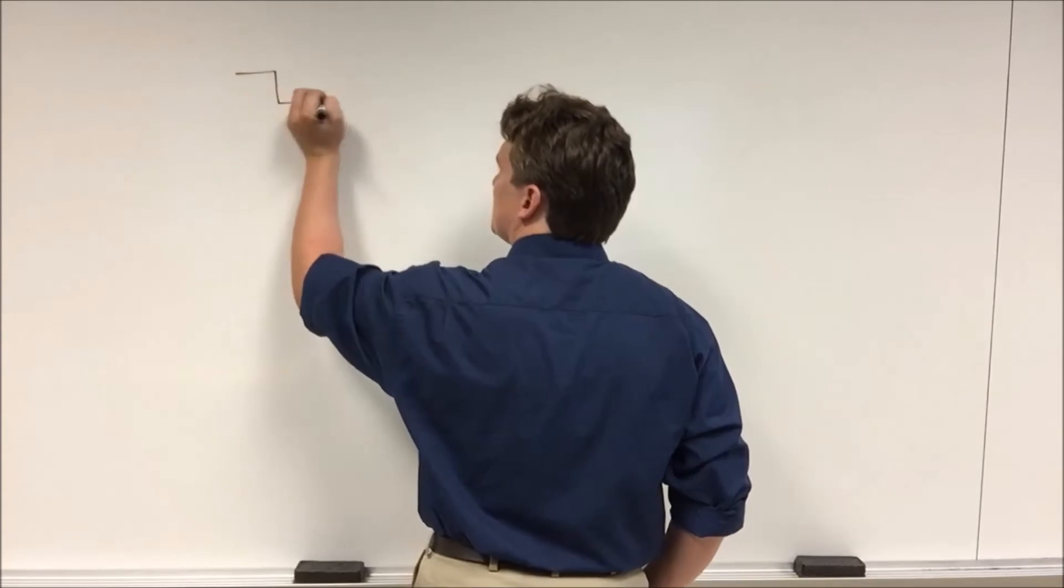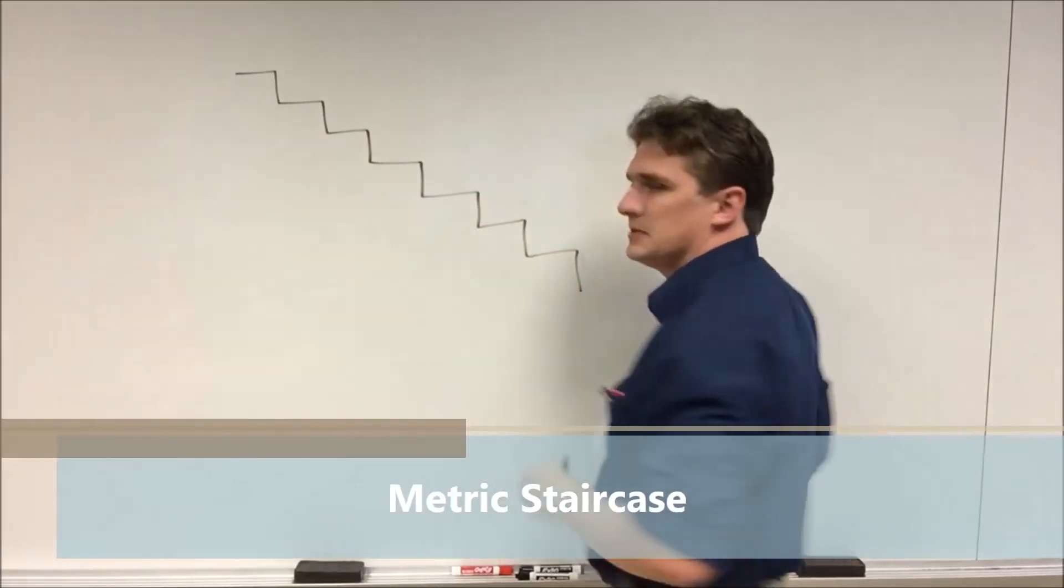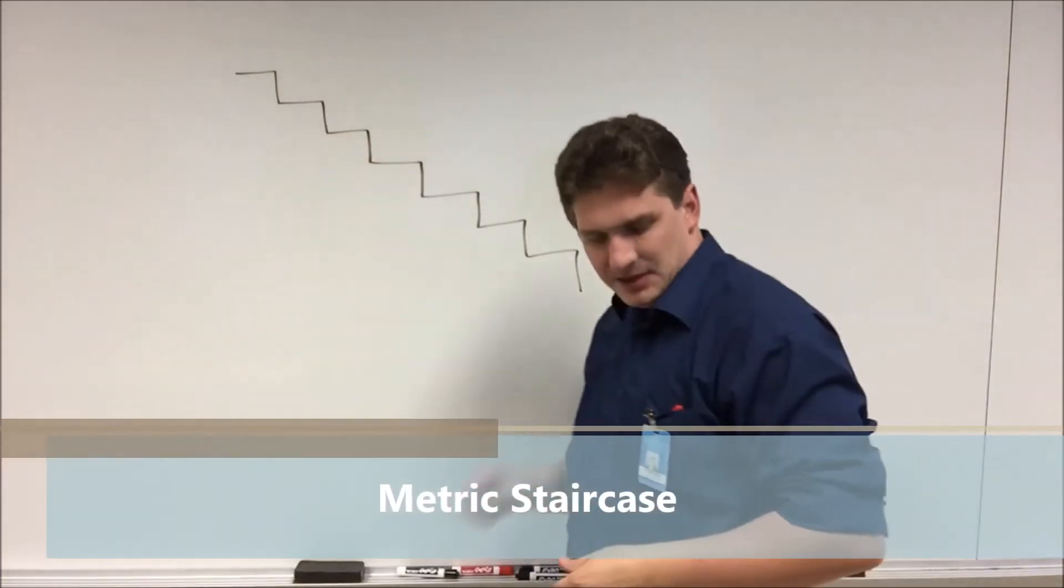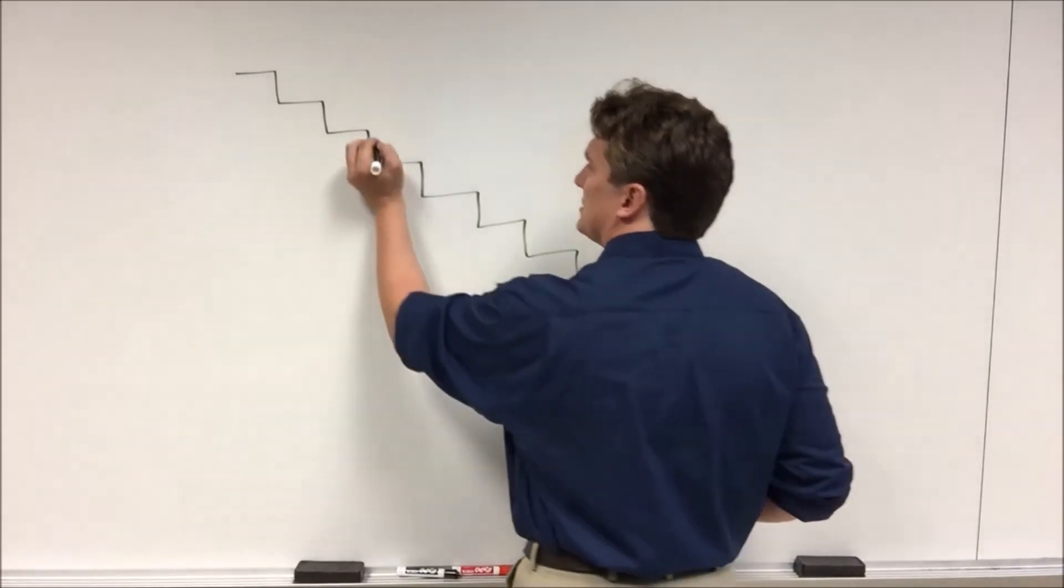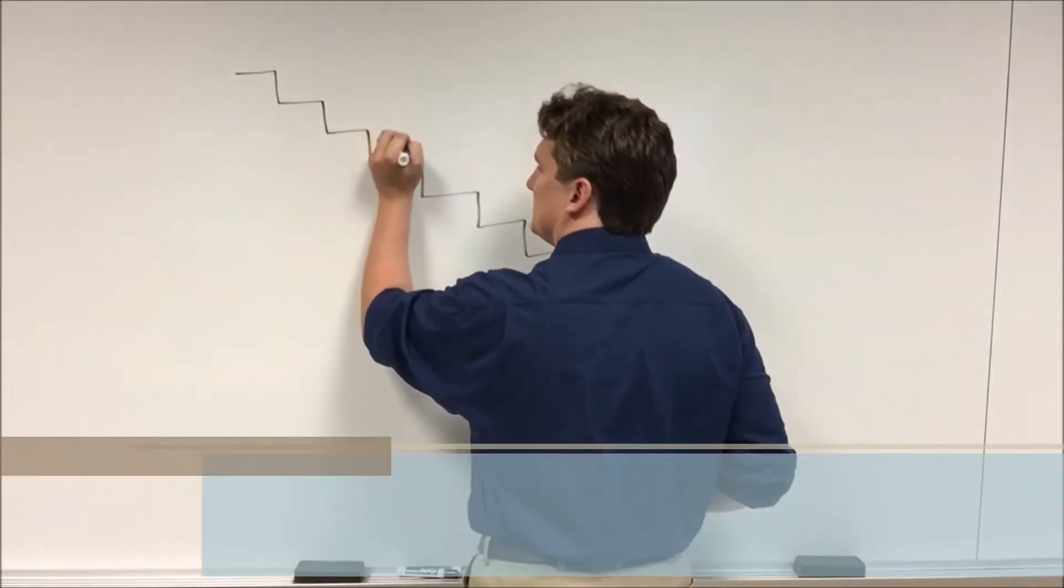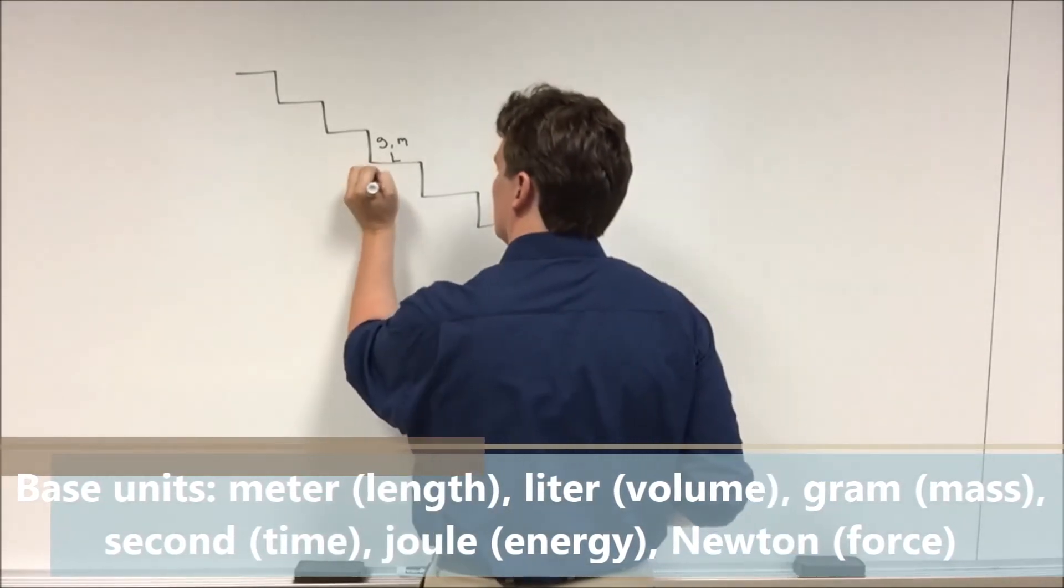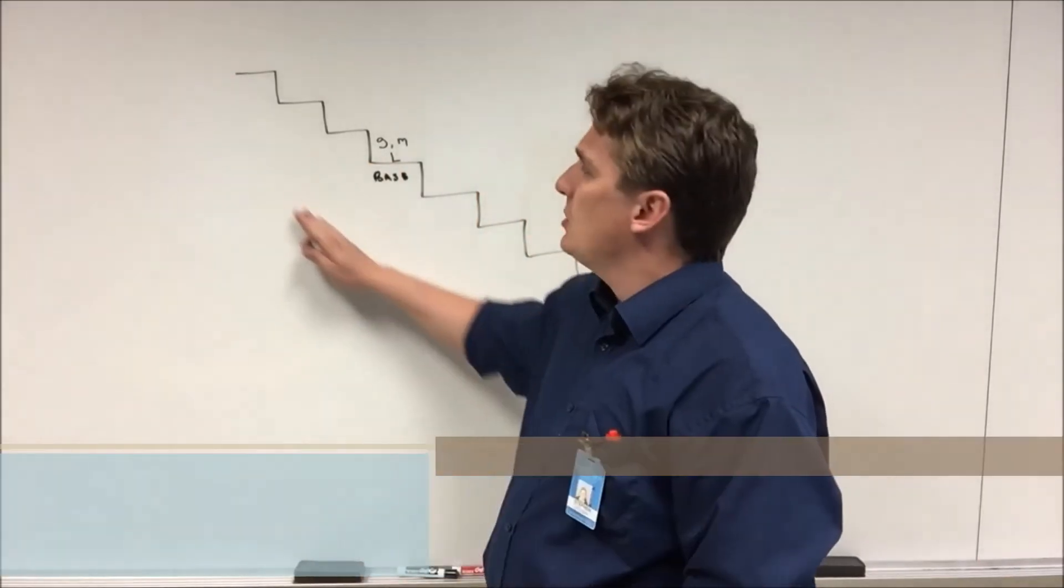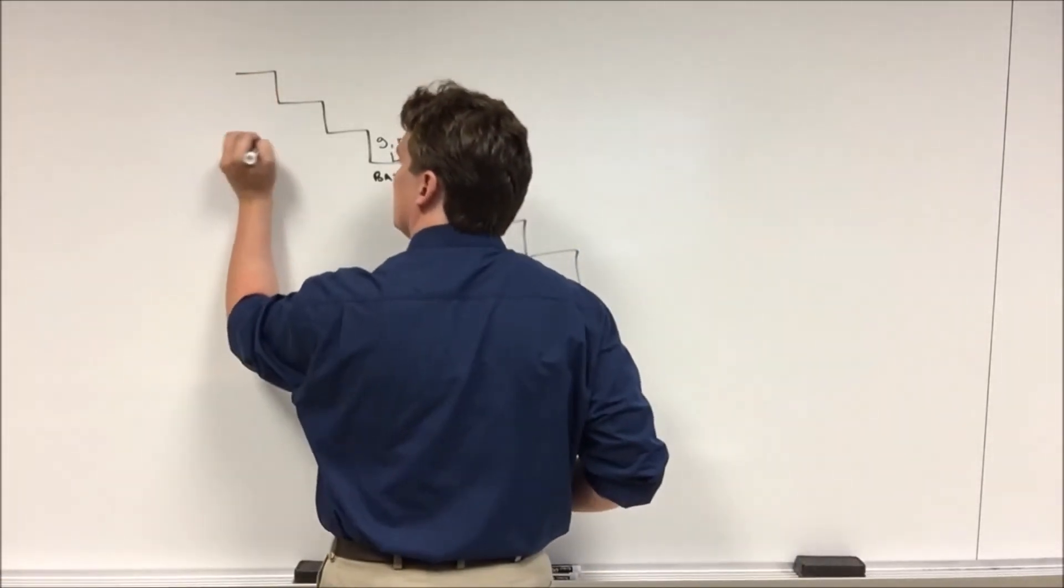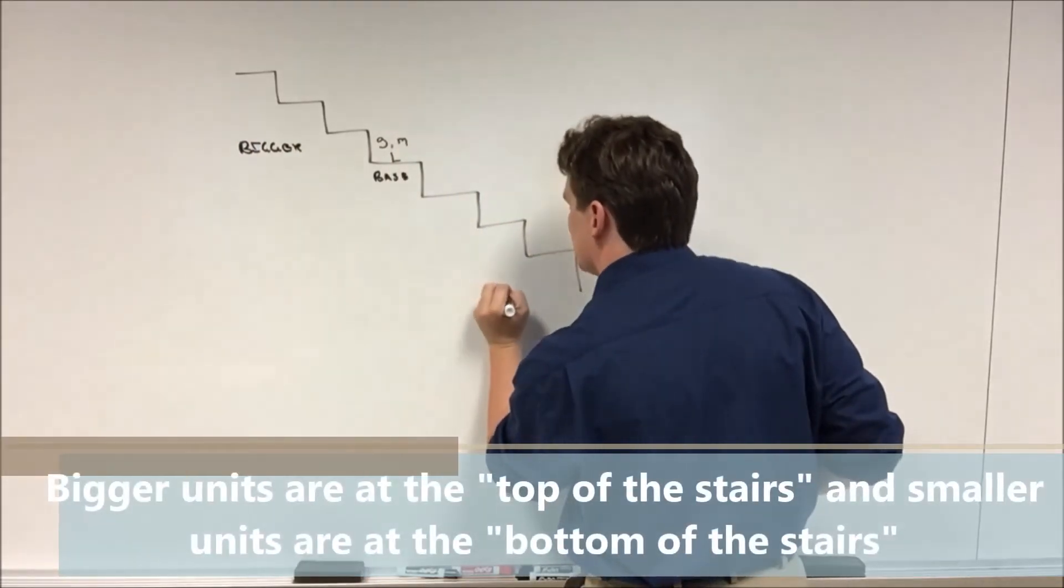So the metric staircase looks like this. And sitting at the center of your metric staircase are what are called the base units. So our base units: gram, meter, and liter. Now the reason I draw this is, as we go up, our units are going to get bigger. These are bigger length scales. As we go down, these are going to be smaller length scales.